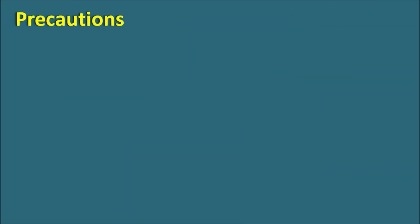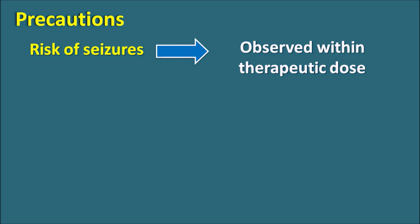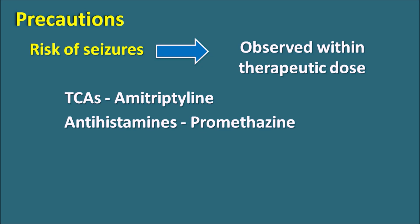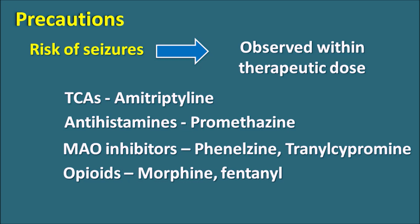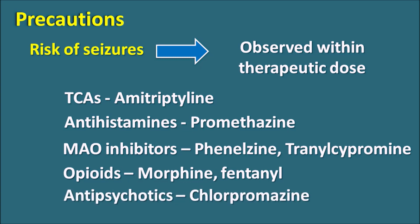What are the precautions? One important precaution is the risk of seizures. This risk is observed even with therapeutic doses of tramadol, so susceptibility to seizures in the patient should be carefully monitored. This is especially important when other drugs are co-prescribed, such as TCAs like amitriptyline, antihistamines like promethazine with tricyclic structure, MAO inhibitors like phenelzine, tranylcypromine and isocarboxazid, other opiates like morphine and fentanyl, and antipsychotics like chlorpromazine. All these drugs further increase the risk of seizures when given concomitantly with tramadol.